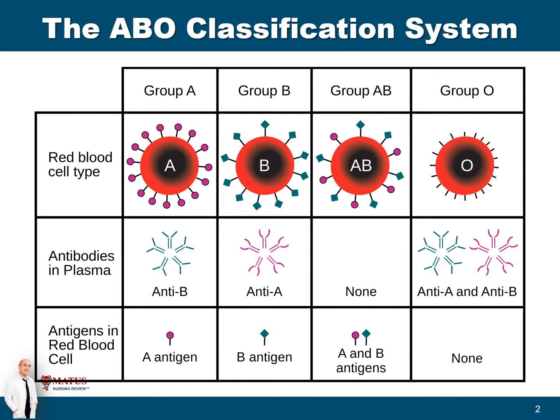For example, for type A blood, the antigen is A. For type B blood, the antigen is B. For type AB blood, the antigen is A and B. And for type O, it means there is no antigen.